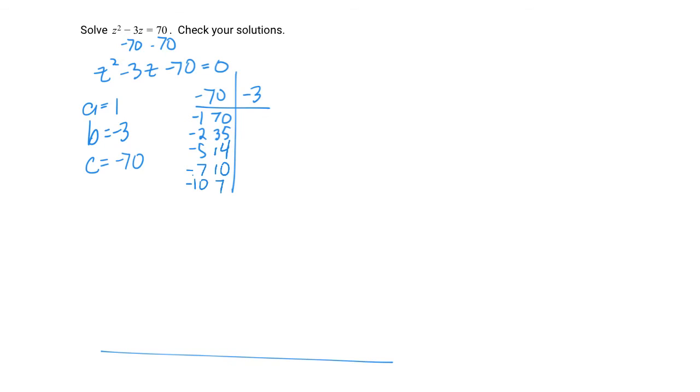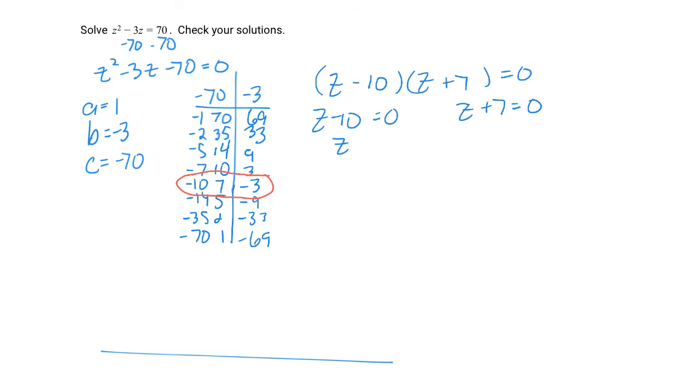And then we go back the other direction. Negative 10 and 7. Negative 14 and 5. Negative 35 and 2. Negative 70 and 1. So that's 69, 33, 9, 3, negative 3, negative 9, negative 33, negative 69. We care about negative 3, and that's negative 10, positive 7. So we have z in the front of each parentheses. Minus 10 plus 7. That product is equal to 0. Now we set each factor equal to 0 and get a value for z. z will equal 10 or negative 7.